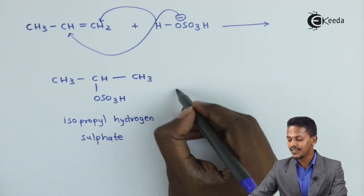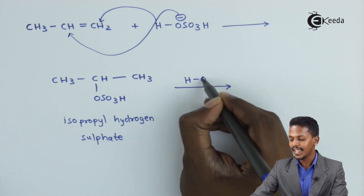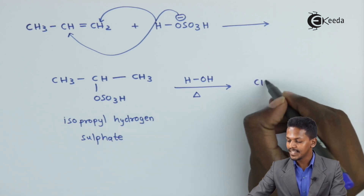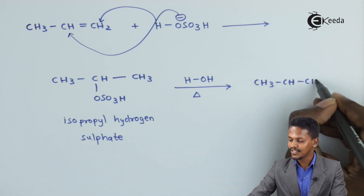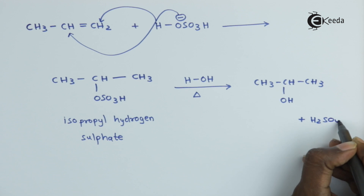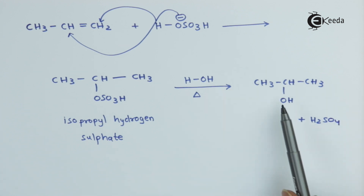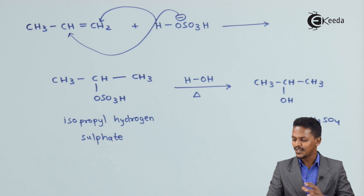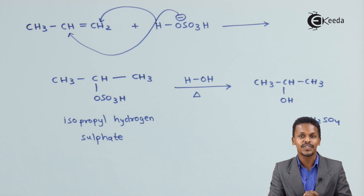Isopropyl hydrogen sulfate is not the final product, so we do the hydration process by adding water and providing heat. The product obtained is CH3CHOH-CH3, which is isopropyl alcohol, also called propan-2-ol, with H2SO4 as a byproduct. So we can prepare primary alcohol if the alkene is symmetrical — specifically using ethene — and a secondary alcohol if we use any other alkene. This is the hydration reaction of alkene using H2SO4.